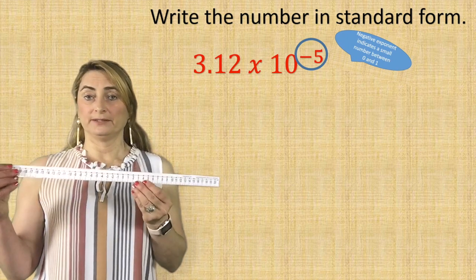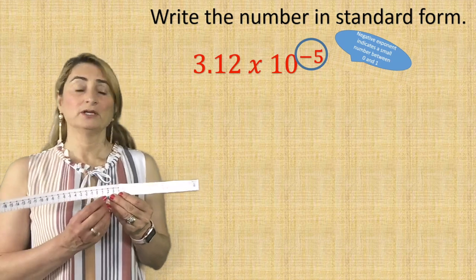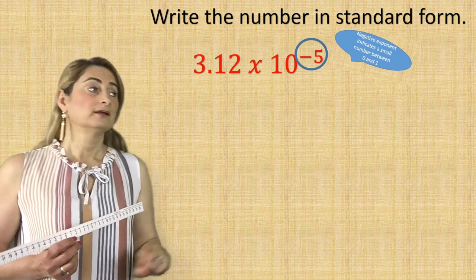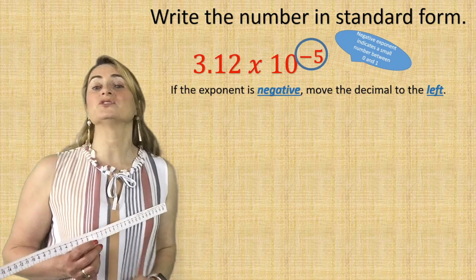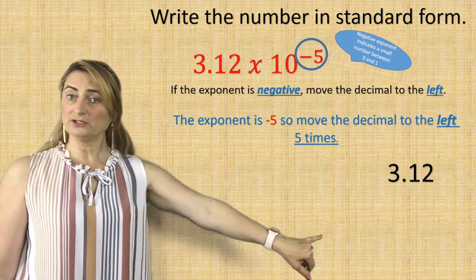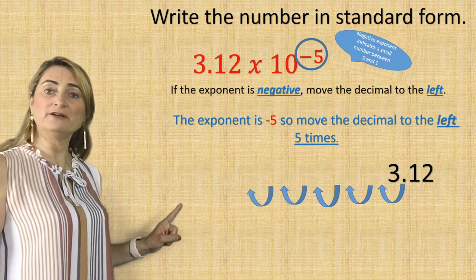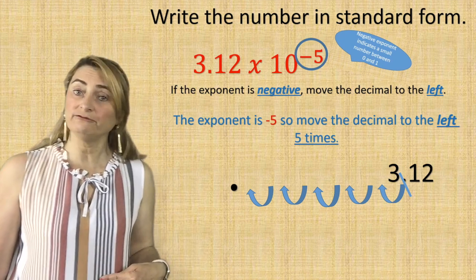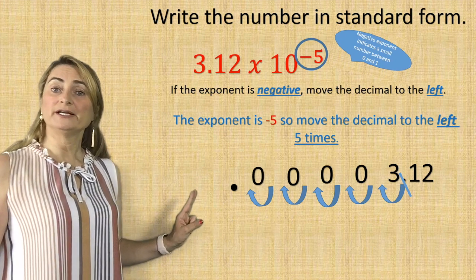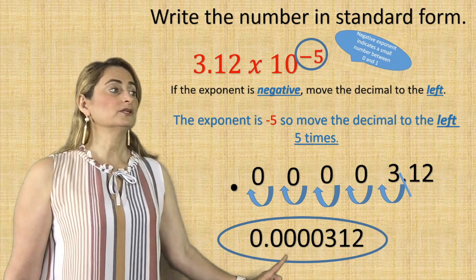Now think about your number line. If you go to the left, numbers get smaller, and if you go to the right, numbers get bigger in value. So if you have 3.12, how do I make this number smaller? Because you have a negative exponent, the number is between 0 and 1. If the exponent is negative, move the decimal to the left. The exponent is negative 5, so move the decimal to the left 5 times. Write the number 3.12, then move the decimal: 1, 2, 3, 4, 5 times, and now put the decimal there. Make sure you remove the original decimal — you can't have two decimals on the same number. Fill out the empty spaces with zeros, and you end up with 0.0000312.